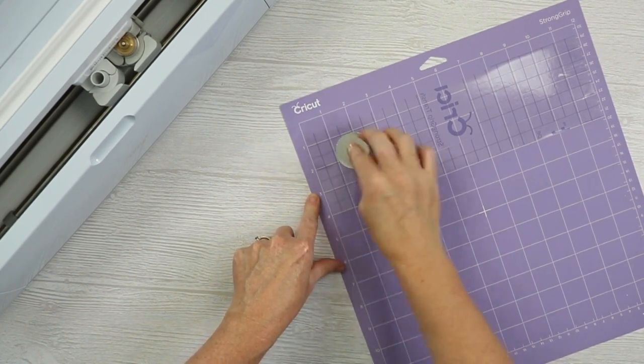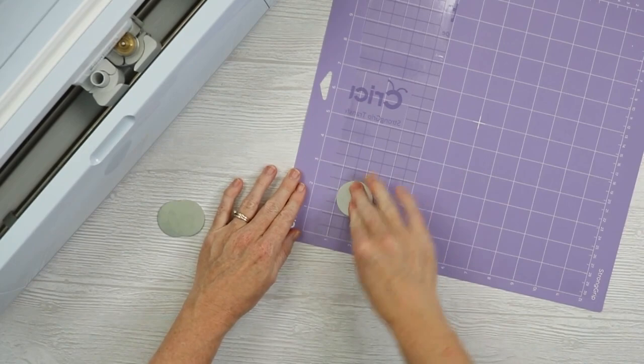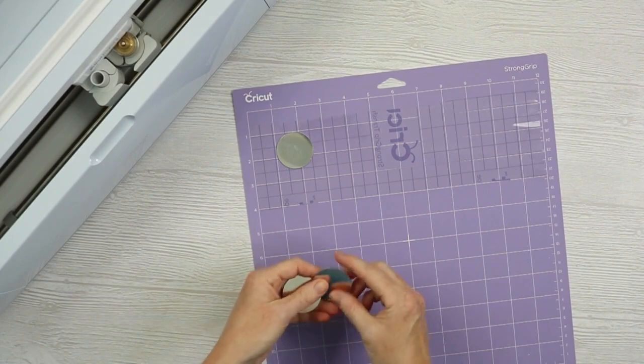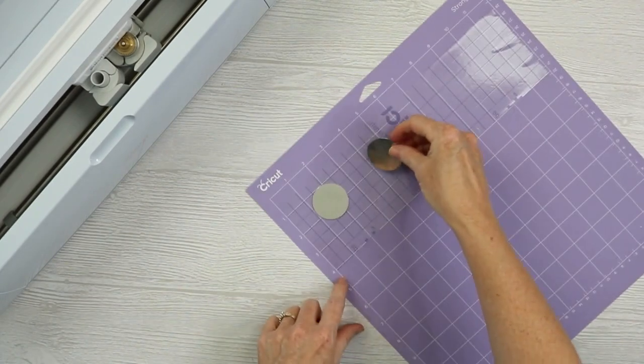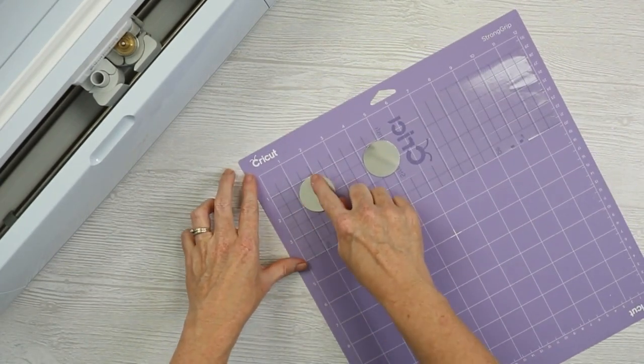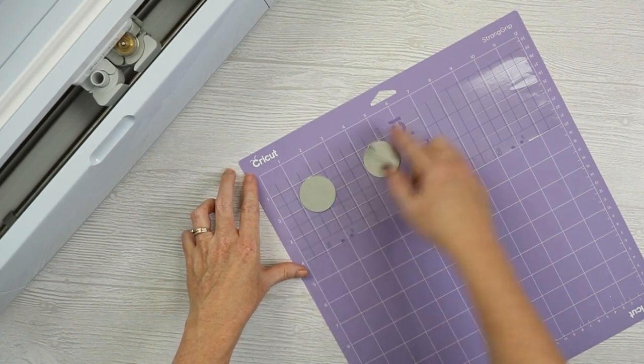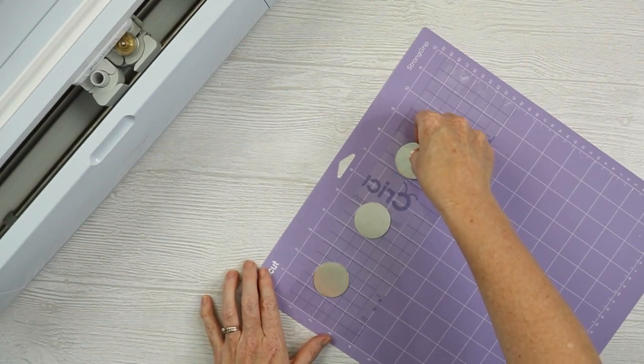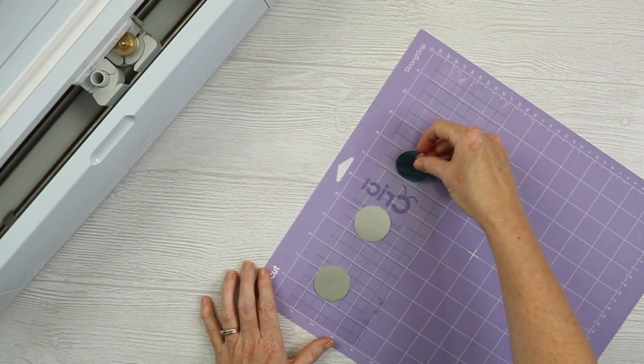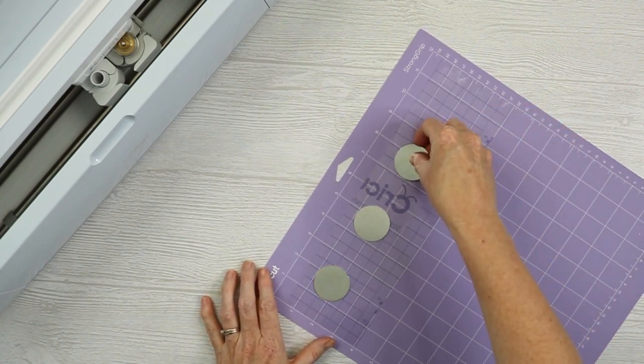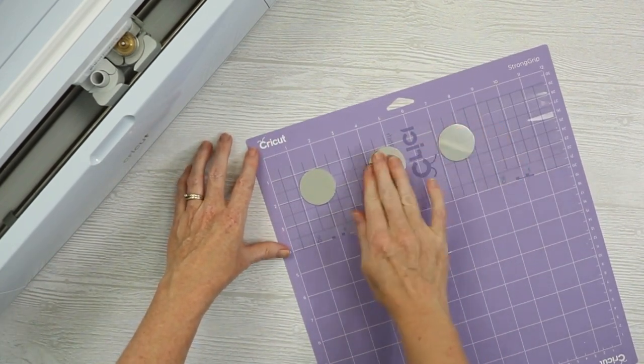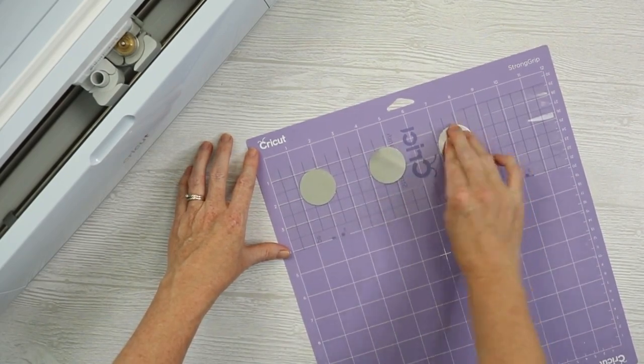And then we want to locate our blanks. So remember when we were in design space, I said you could locate them however you want. So I'm going to locate at the one and two inch mark here. And I'm going to move my designs in Cricut design space to where they will be located in the same area. So you just want to press it down really well. So I'm using this as an alternative so we can hopefully go all the way to the edge of these ring dishes.